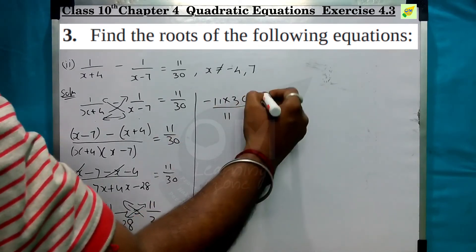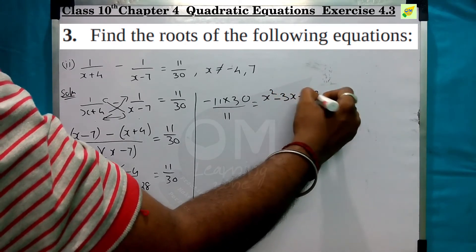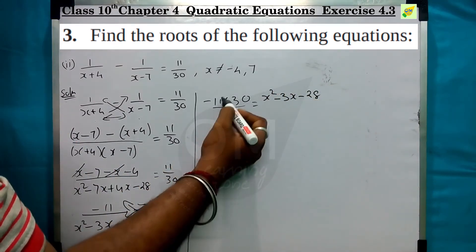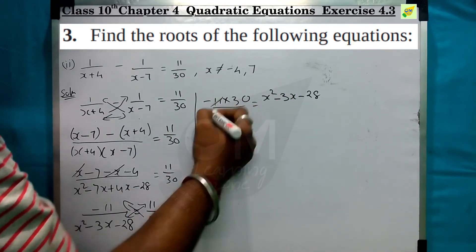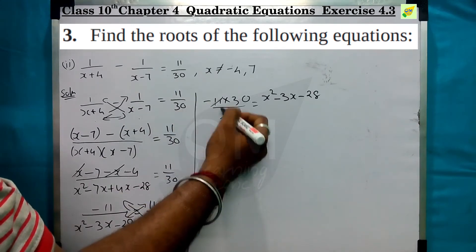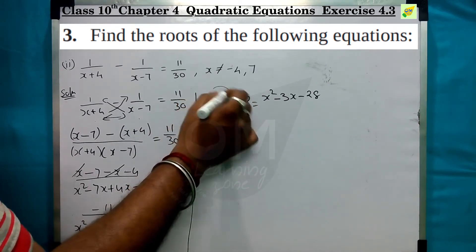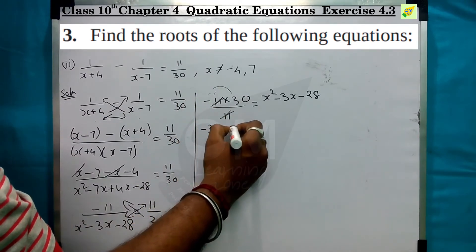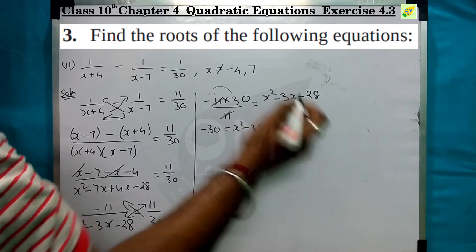What is x² minus 3x minus 28? If you look at 11, the multiplication is here — 11 and 11 cancel. This is minus 1 times. Minus 1 into 30 is minus 30, equal to x² minus 3x minus 28.